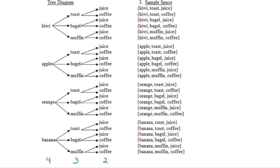While a tree diagram helps us organize and visually see what's happening, it becomes problematic when given a lot of possibilities. Let's look at a faster way. There are four pieces of fruit, and each can be paired with one of three pastry items. Four different fruit choices times three different pastry choices gives us 12 different possible menus. If we then incorporate the beverages, for which we have two choices, each of those 12 possibilities is doubled — so four times three times two is 24 possibilities in total.